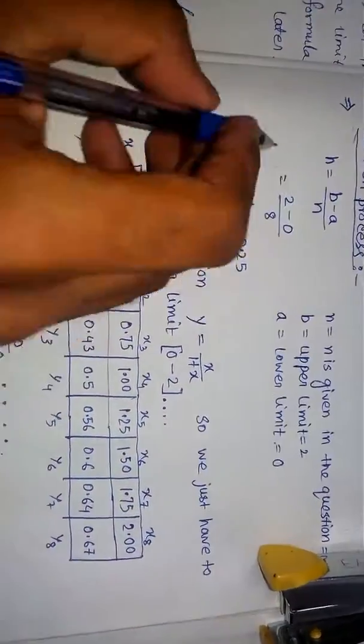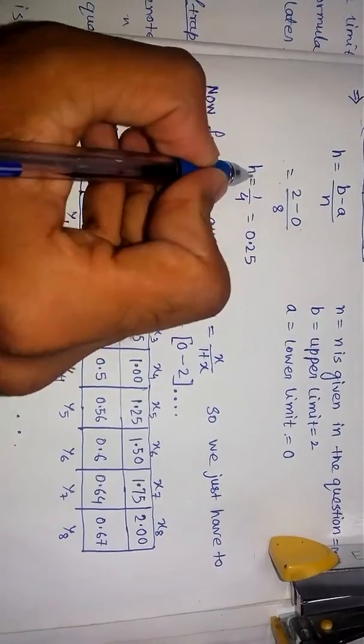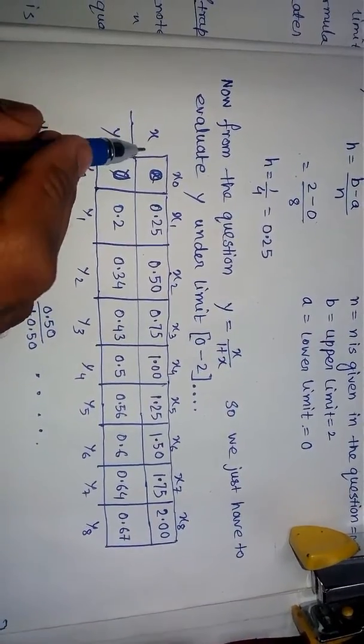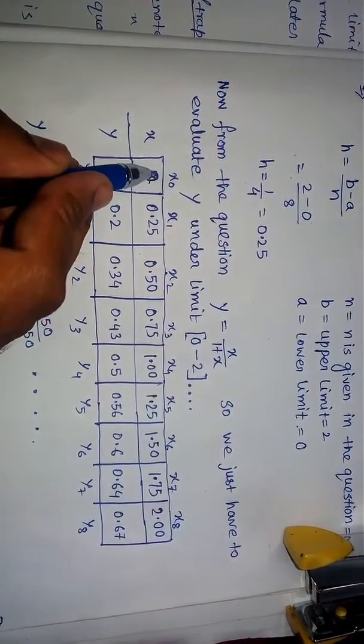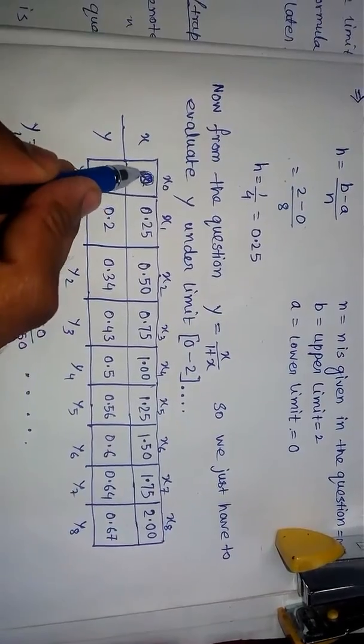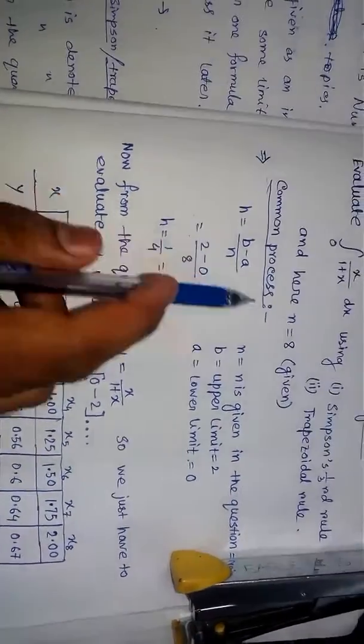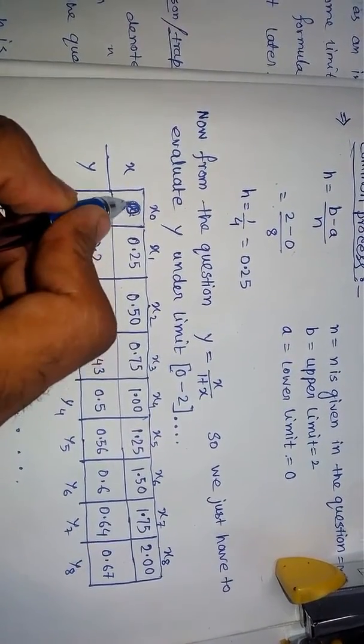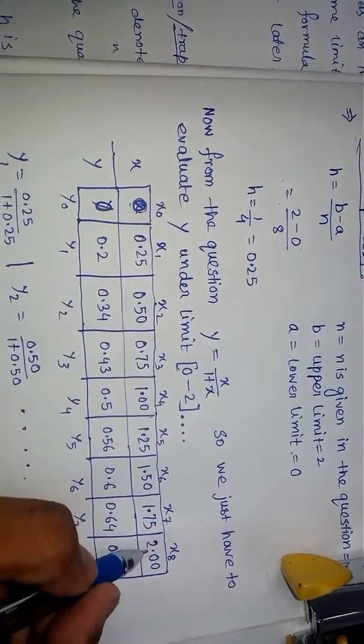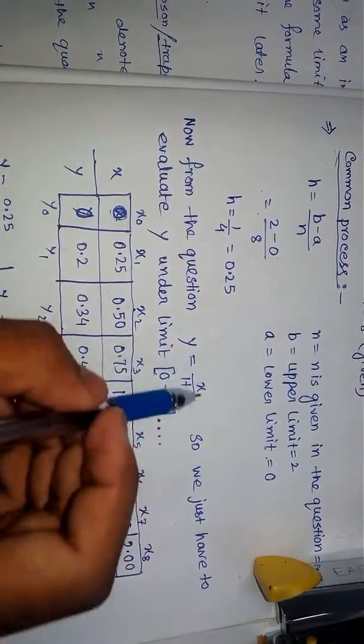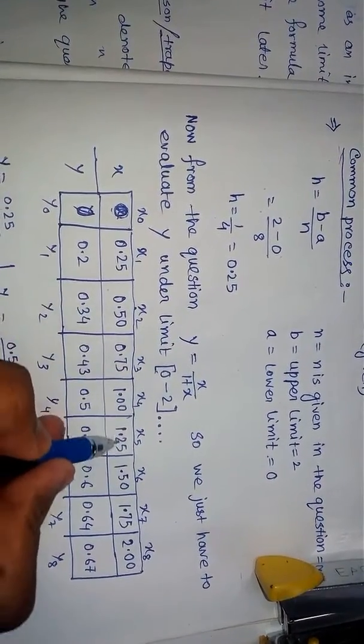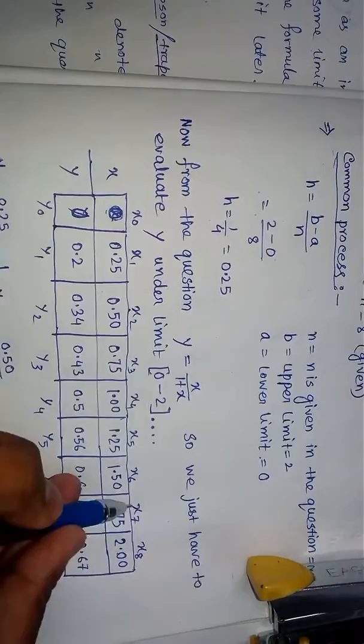First, we have to make a table on the basis of this data. Here, h is the difference. For x, what is the value of x starting from 0? The lower limit is 0, so here is 0, and it ends at 2. The limit is between 0 and 2, so we will start the value of x from 0 and end at 2.